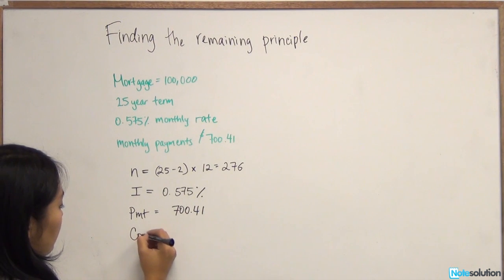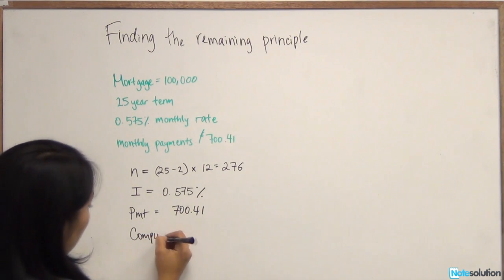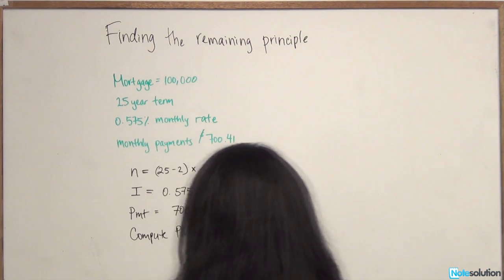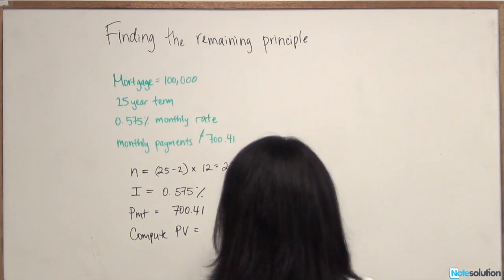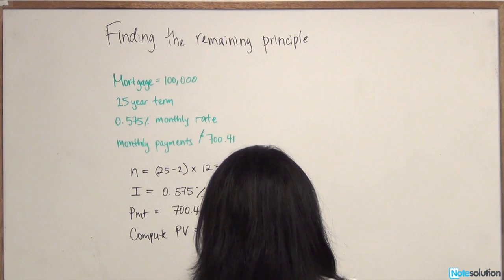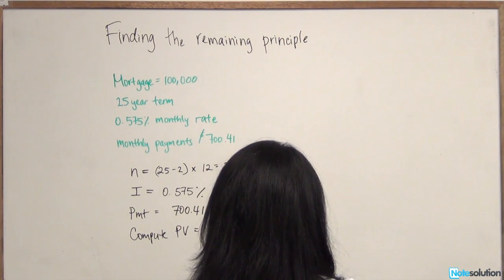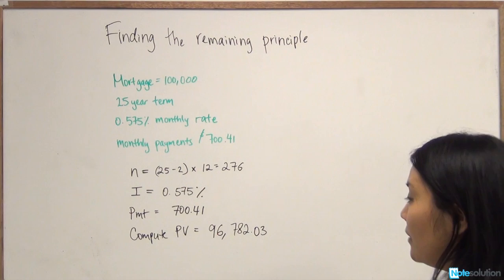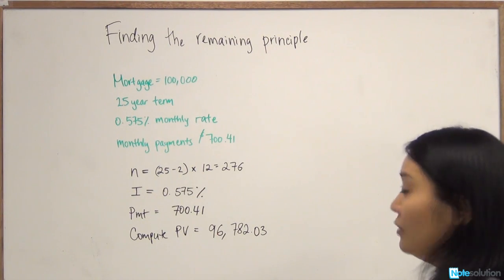So we compute PV, and we get a figure of $96,782.03. So after paying down this mortgage for two years, your remaining principal is $96,782.